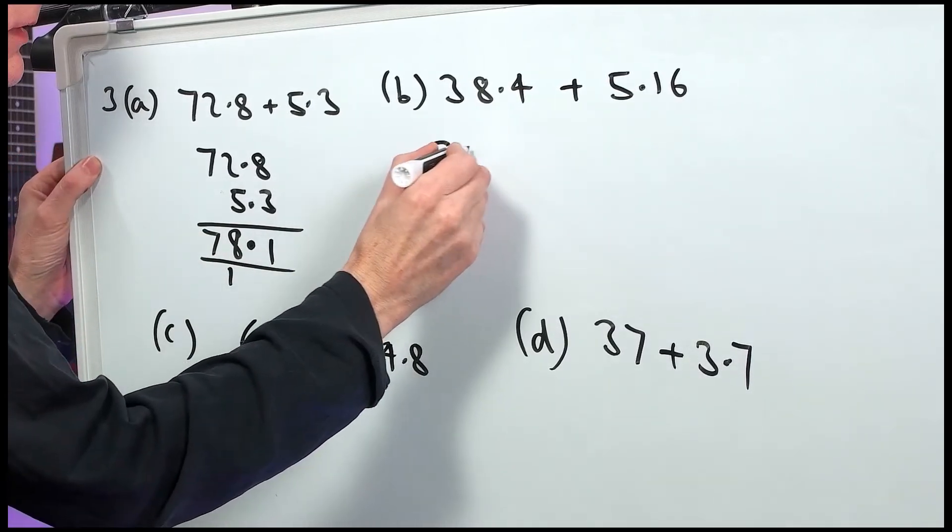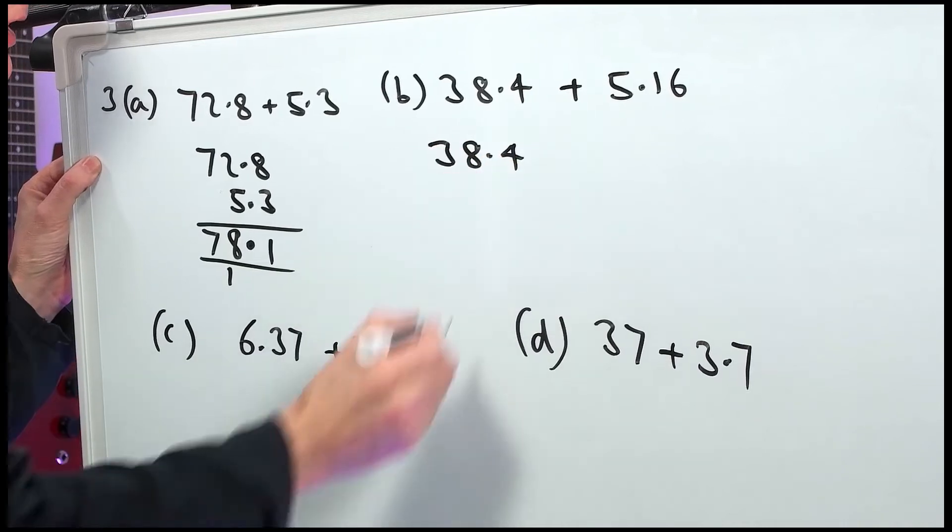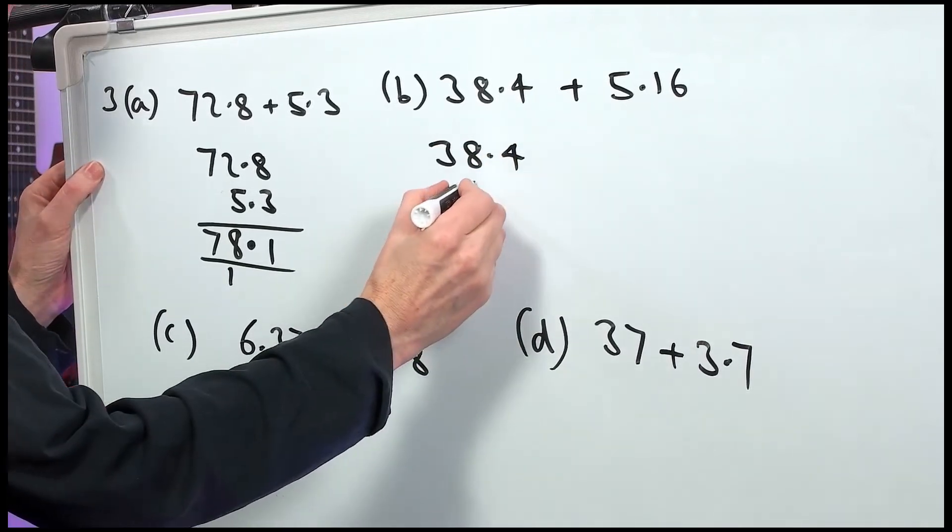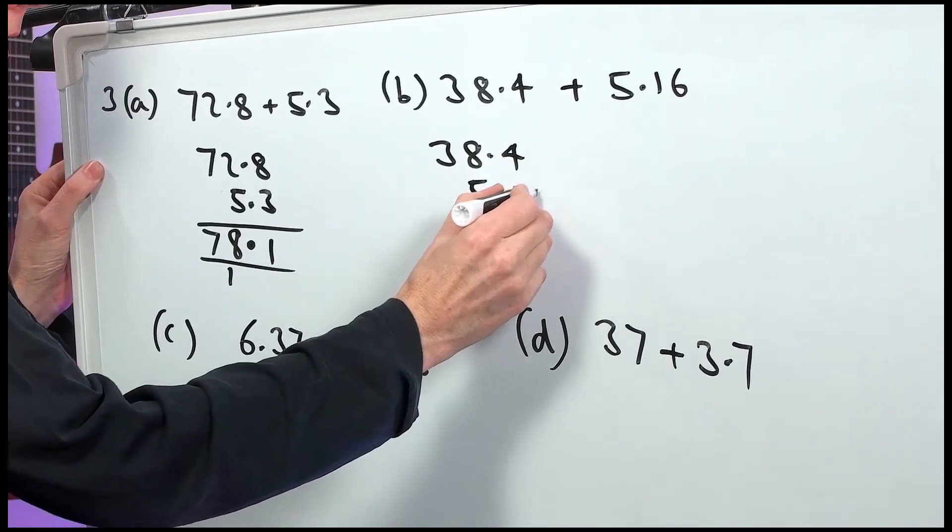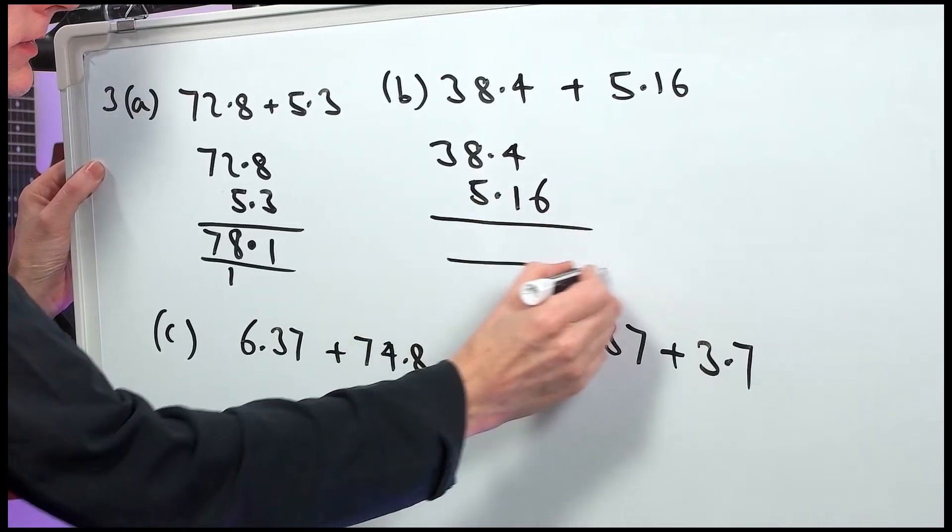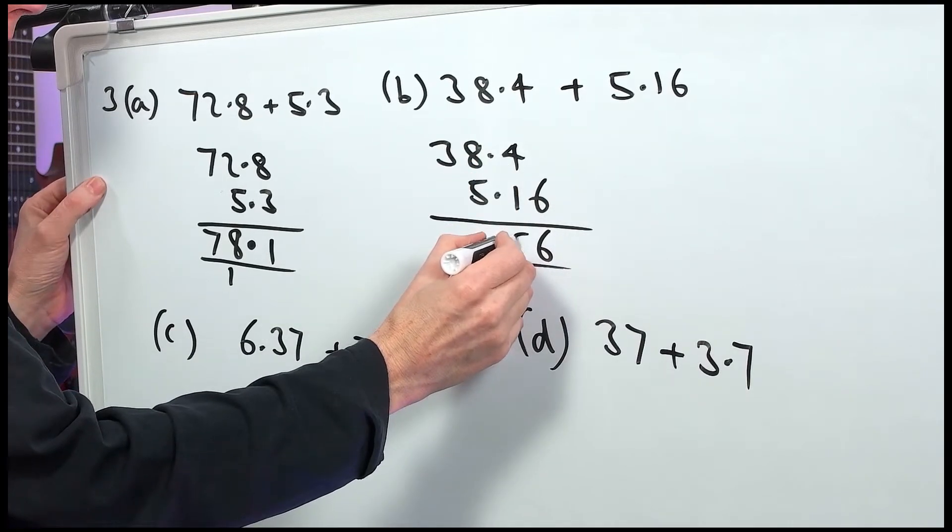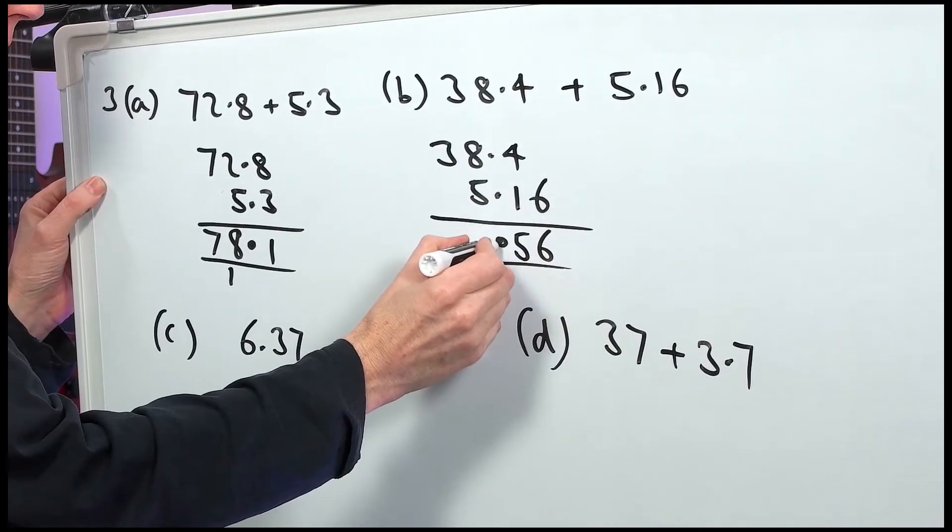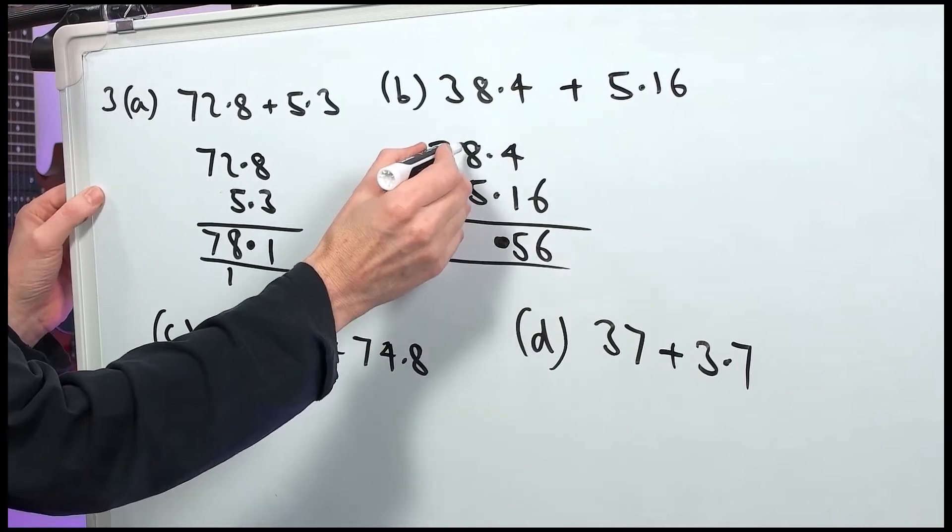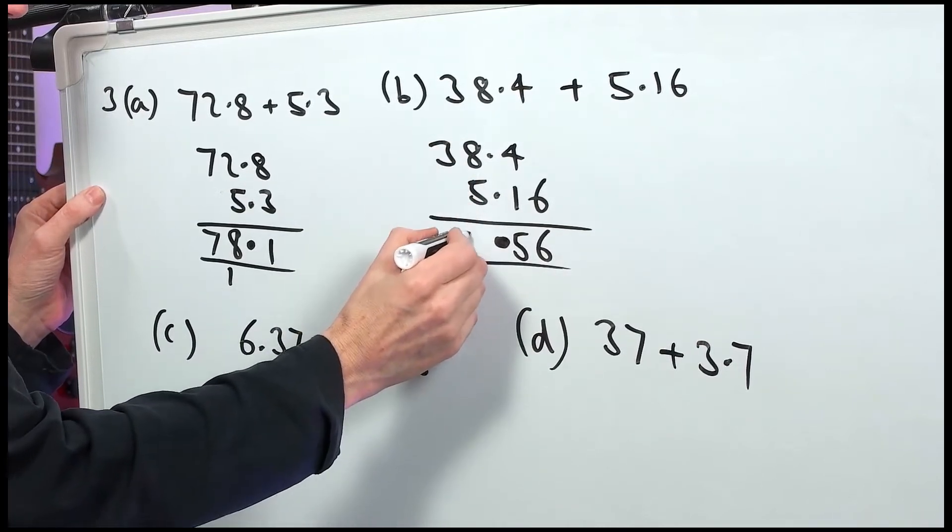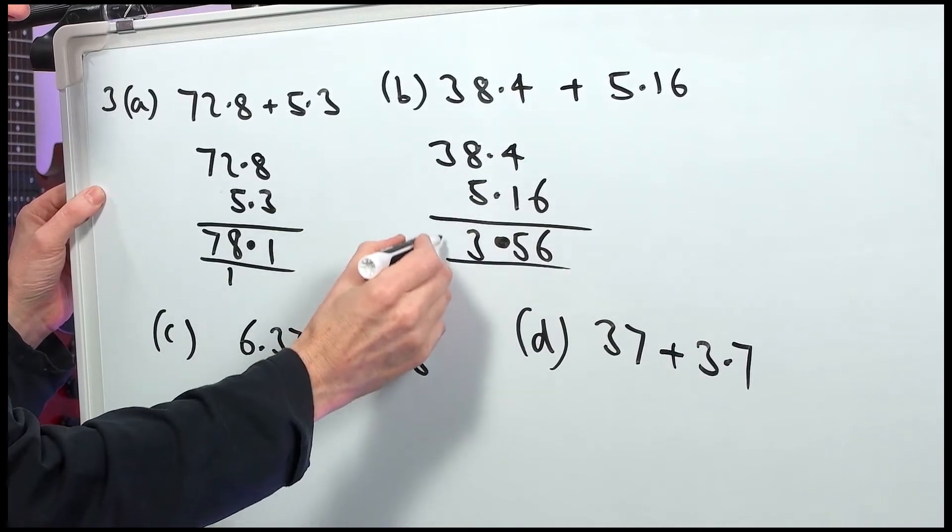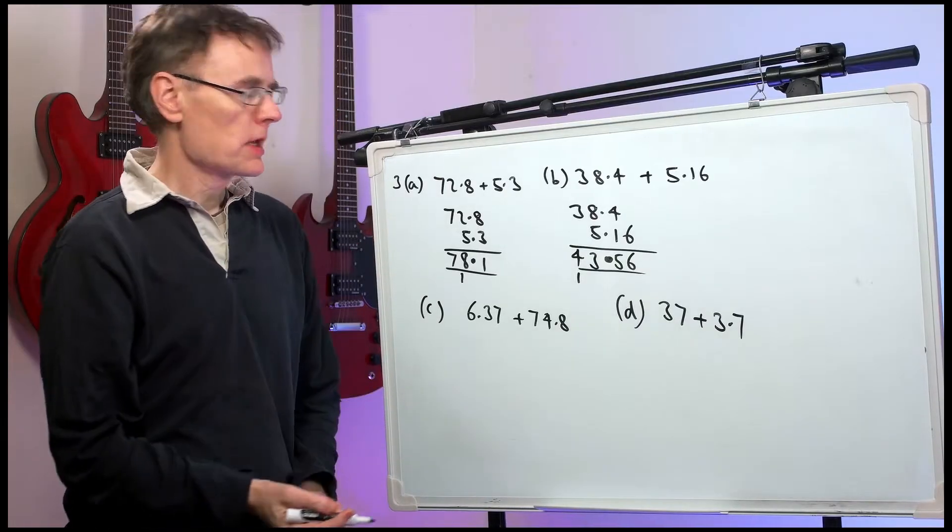Part B. 38.4 plus 5.16. Lined up in the correct columns. Nothing plus 6 is 6. 4 plus 1 makes 5. Decimal point lines up. 8 and 5 makes 13. 3 plus 1 is 4. 43.56.